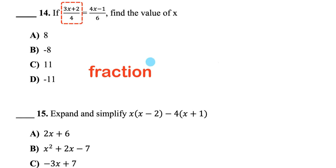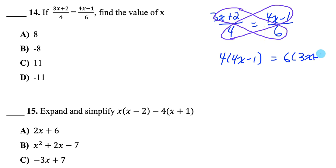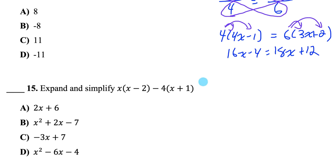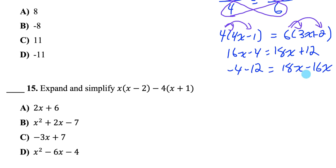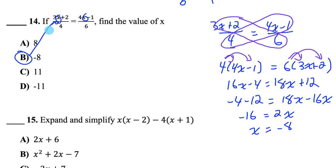Question 14: Solve the equation for x. When you have fraction equals fraction, you can cross multiply. Writing the products on each side gives 4 times (4x minus 1) on the left and 6 times (3x plus 2) on the right. Distributing gives 16x minus 4 equals 18x plus 12. Get the x terms on one side and constants on the other: negative 16 equals 2x. Divide both sides by 2 — x equals negative 8. Always plug it back in to verify.